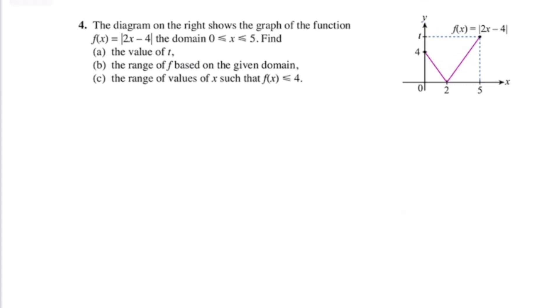Let's move on to question number 4. Now this involves modulus function. The diagram on the right shows the graph of function f(x) = |2x - 4| with the modulus, for the domain of x between 0 and 5. So you're supposed to find the value of t. Now t is your y value when your x value is 5, so we can say t is basically f(5). So we're gonna put 5 inside your modulus, so this is |10 - 4|, which is |6|. Modulus of 6 is just 6.